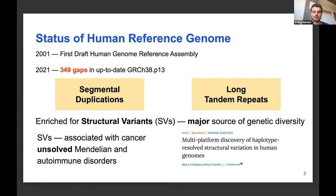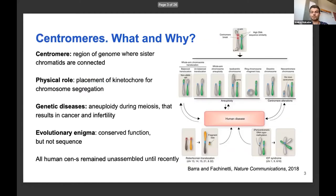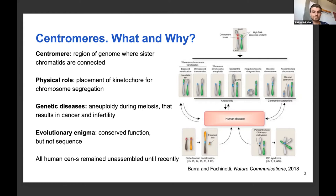These structural variants are associated with cancer and Mendelian and autoimmune disorders. What we're particularly interested in is centromeres — the regions of the genome where sister chromatids are connected, and where the kinetochore is placed during chromosome segregation. As you can imagine, if something goes wrong with those sequences, bad consequences can happen. There are genetic diseases associated with centromeres, and aneuploidies arising during meiosis can result in cancer and infertility.